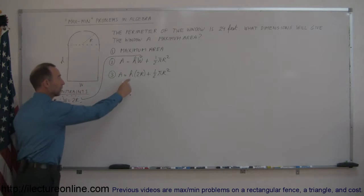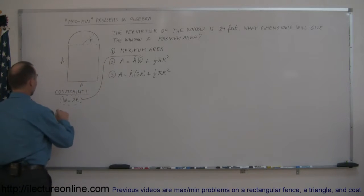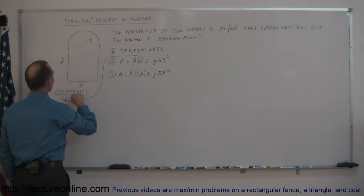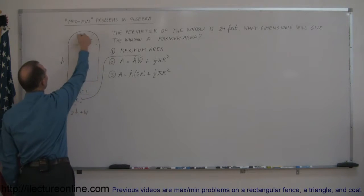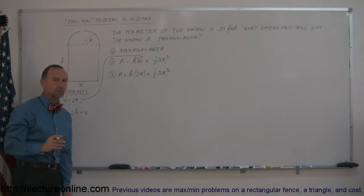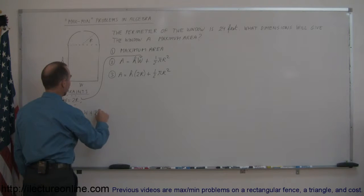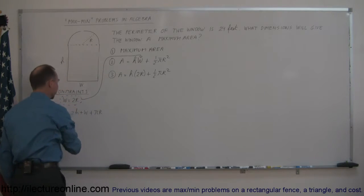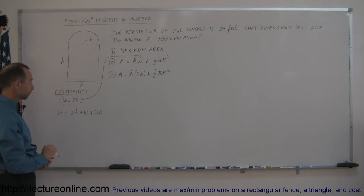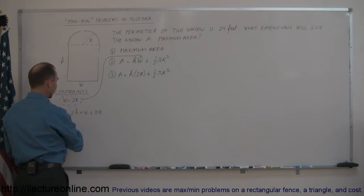We have one more constraint to go — we want to get rid of h. The other constraint is that the perimeter of the window is 24 feet. So 24 feet is equal to the sum of all the sides of this window: h, h, and w — so that's 2h plus w, plus the circumference of a half circle. The circumference of a circle is 2 pi r, so half of that would be pi r. So the circumference of the half circle plus 2h plus w should add up to the full perimeter of 24 feet. Now let's solve this equation for h.